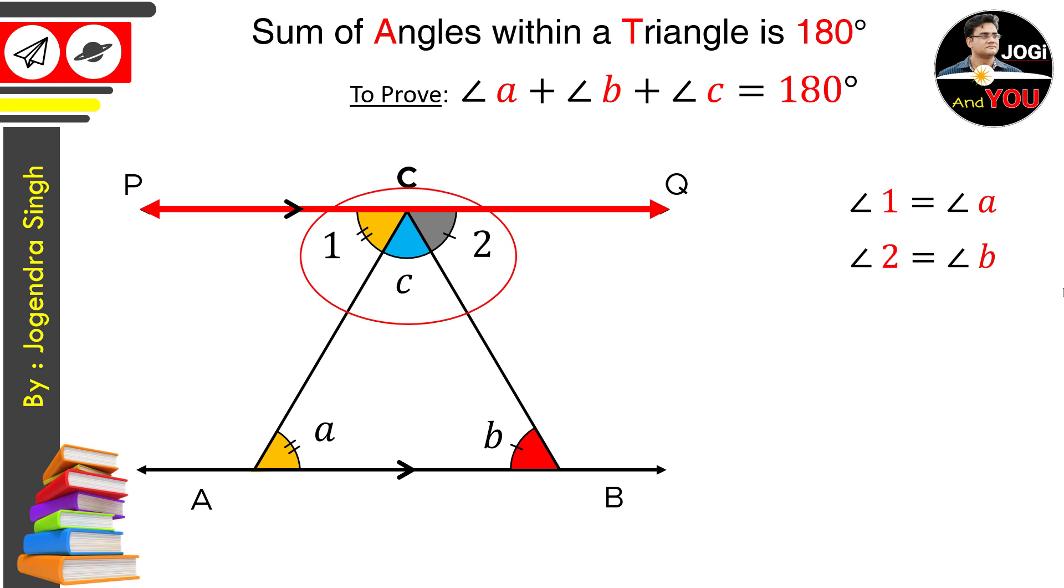The angles formed at the point C on the line PQ is a linear angle or a straight angle. As you all know that the measurement of a straight angle is always 180 degree. Doesn't matter in how many parts you divide this angle, it will always remain the same as 180 degree. Since PQ is a straight line, the sum of angle 1, 2 and C will equal 180 degree because they are linear angles. We can write this as angle 1 plus angle 2 plus angle C equals 180 degree.